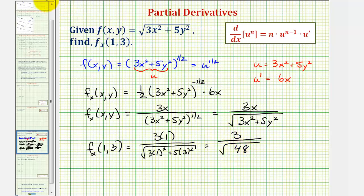But the square root of 48 does simplify. 48 is equal to 16 times 3. The square root of 16 is 4, so this would be 4√3. So this simplifies to 3 divided by 4√3, which again is the slope of the tangent line on the surface at the point (1, 3).